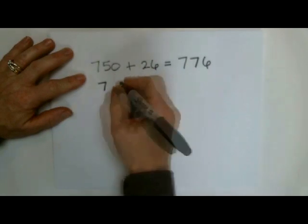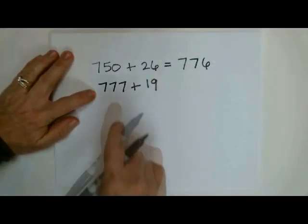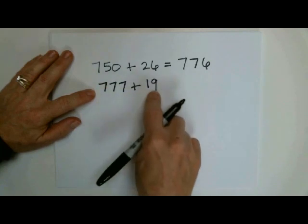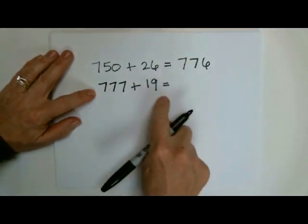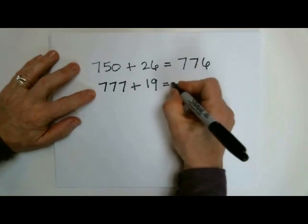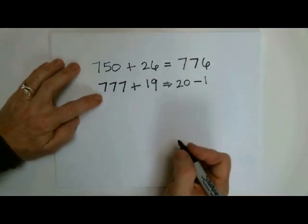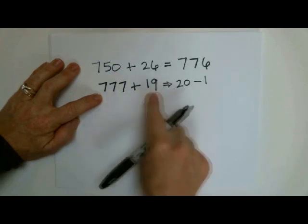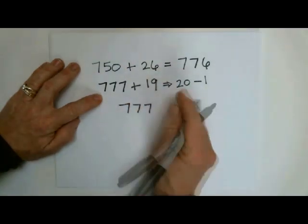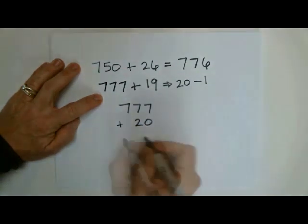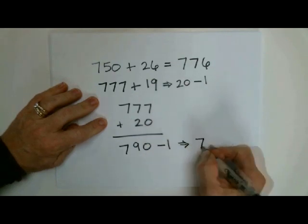Suppose I give you a problem like 777 plus 19. How would you do that? Well, you'd start to say 777 plus 19. Now, 19, what is 19 close to? It's close to 20, isn't it? So I would actually rewrite this to be 19 is also known as 20 minus 1. Now that's a much easier problem, isn't it? Usually you can rewrite hard addition problems into simple subtraction problems. So what are we going to do first? We're going to take 777, and we're going to add 20. And we're going to get 790 minus 1. The final result is 789.